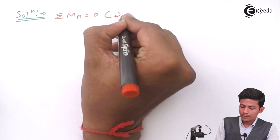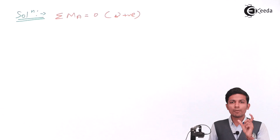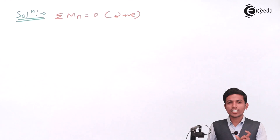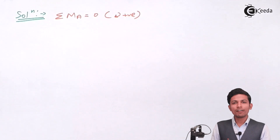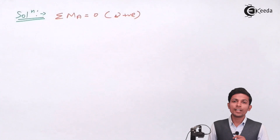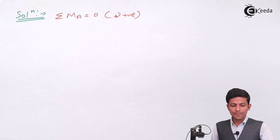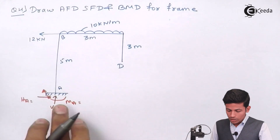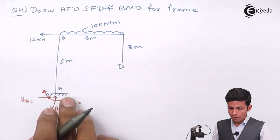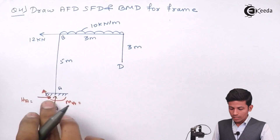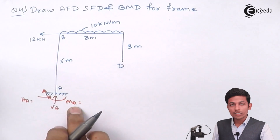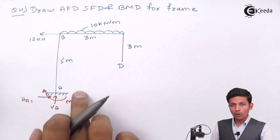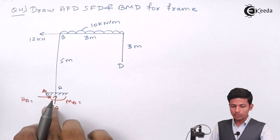Always remember the sign conventions: in moment equations we take clockwise as positive, while in bending moment we consider sagging or hogging. The unknown moment MA is clockwise, so it is positive.